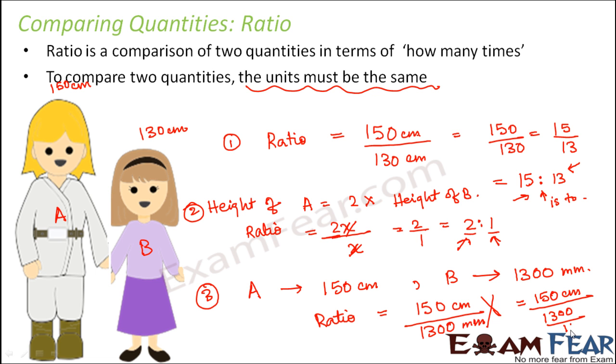So what happens, this becomes 150 centimeter divided by, we know that 1 millimeter is equal to 1 by 10 centimeter. Therefore, 1300 millimeter would be 1300 divided by 10 centimeter. So when you try to find out the value, you get the ratio as 15 is to 13.